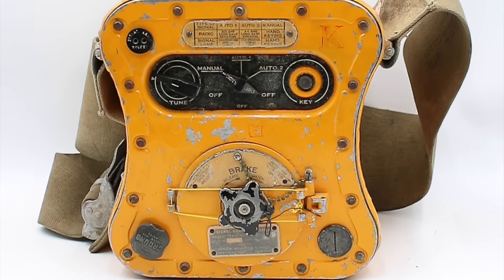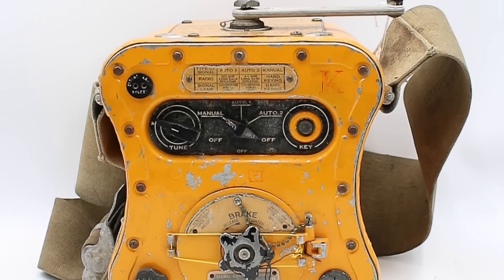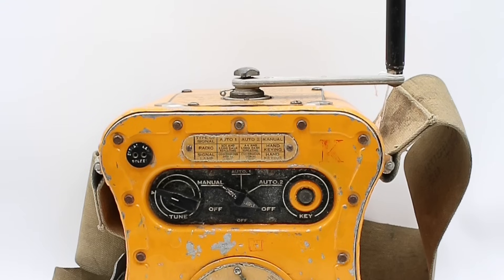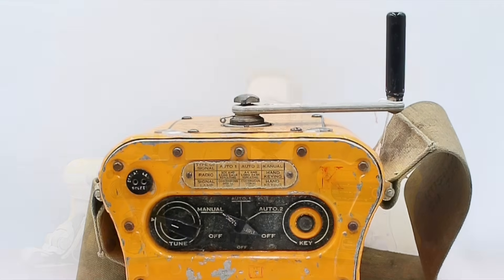So over its 30-year service life, the Gibson Girl went through a number of design changes with the World War II era version that we looked at in the previous video being the SCR578. This came in three sub-variants designated A, B, and C. So all three transmitted at the then-standard emergency frequency of 500 kHz.